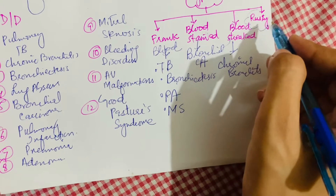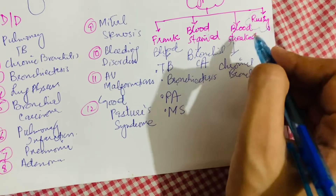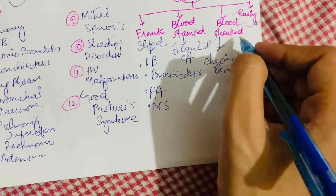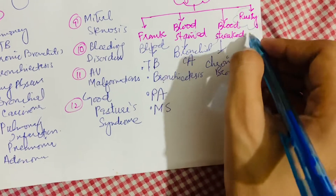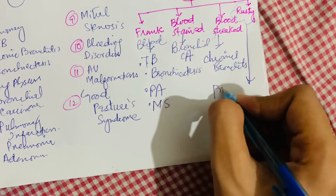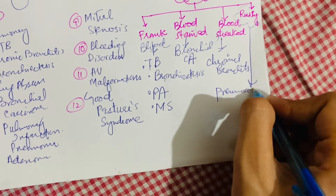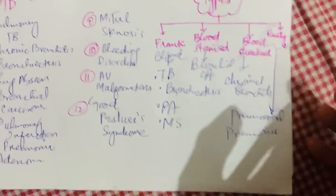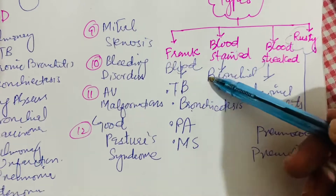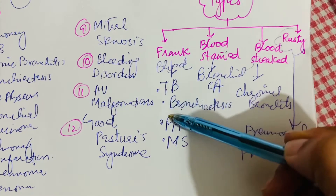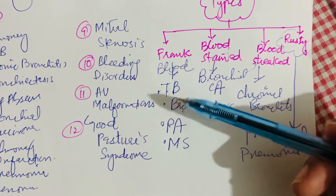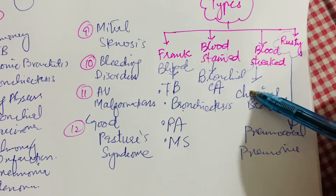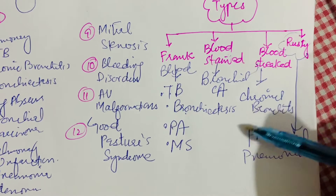The fourth type is rusty sputum. Degradation products of hemoglobin give the sputum a color varying between rust and golden yellow. This is a classic feature of pneumococcal pneumonia. To summarize the four types: frank hemoptysis in tuberculosis, pulmonary embolism, mitral stenosis, and bronchiectasis; blood-stained in bronchial carcinoma; blood-streaked in chronic bronchitis; and rusty in pneumococcal pneumonia.